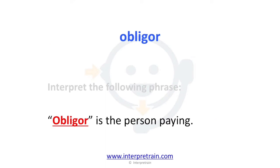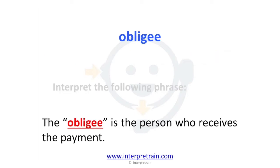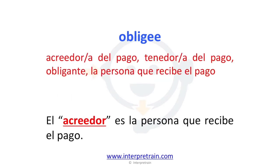Obligor. Obligor is the person paying. Obligor. Obligor is the person who receives the payment. El acreedor es la persona que recibe el pago.